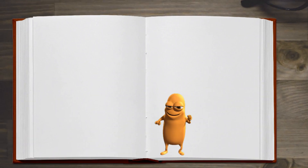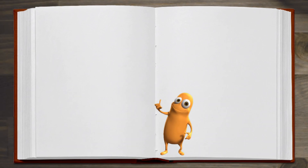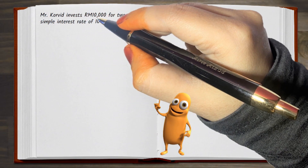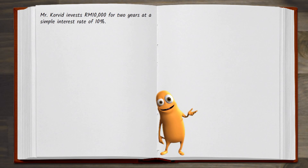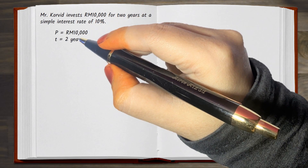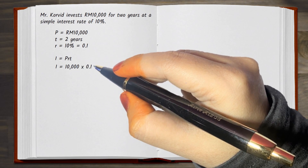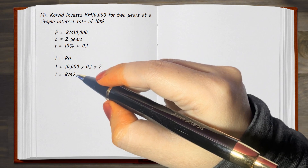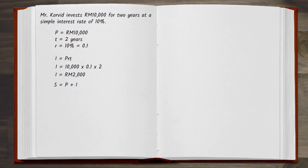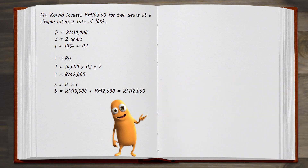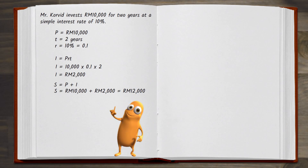Let us use an example to compare simple and compound interest. Assume Mr. Corvid, an investor, invests RM10,000 for two years at a simple interest rate of ten percent. Mr. Corvid earns a total interest of RM2,000 on this investment, making the maturity value RM12,000.